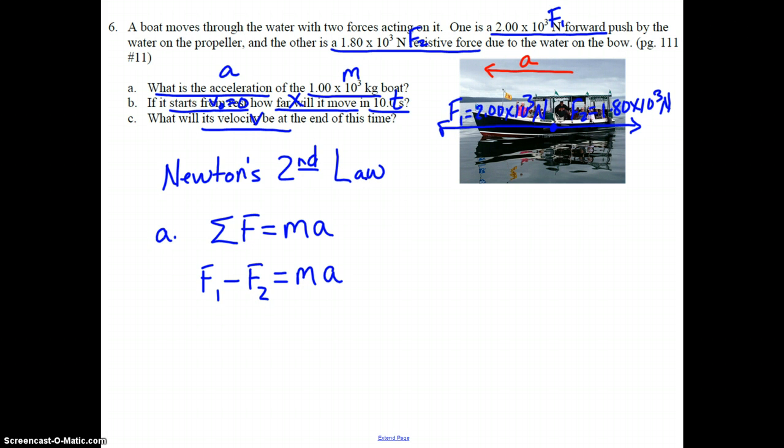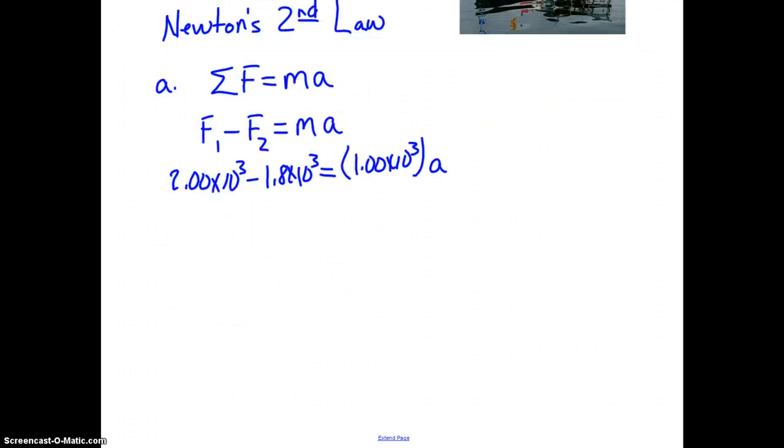So, we now go ahead and sub in the values: 2 times 10 to the third minus 1.8 times 10 to the third equals our mass, which is given as 1 times 10 to the third, times A. Go ahead and algebraically solve for A, and this is a pretty simple one to do. We don't even need a calculator for this one. 2,000 minus 1,800 is 200, equals 1,000A. So, we just move the decimal point three places to the left, so A would be 0.200 meters per second squared. All right, so we have our answer to A.